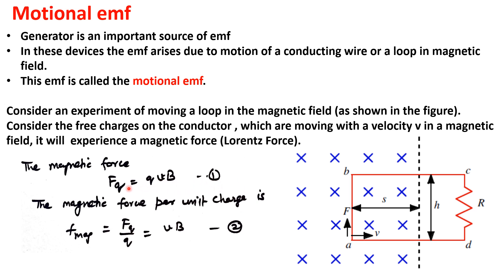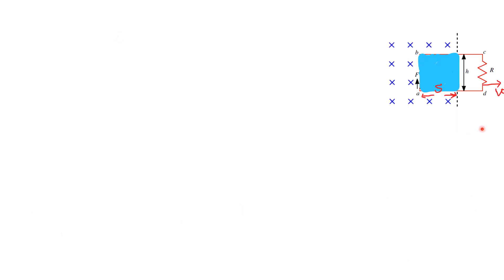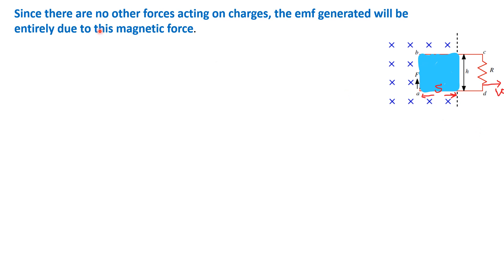The magnetic force per unit charge is f_magnetic equals the Lorentz force divided by q, so q cancels out, giving f_magnetic = vB. There are no other forces besides the magnetic force acting here.